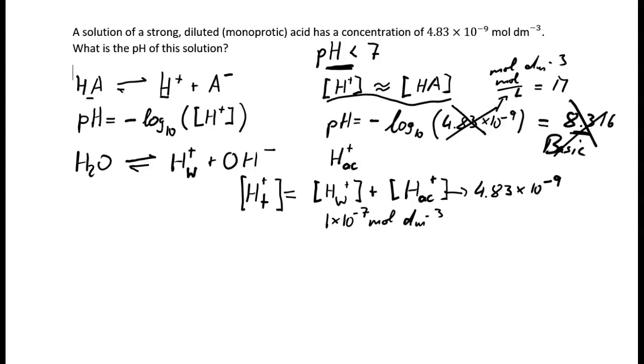And now we can do our pH. So we do pH equals negative log to the base of 10 for the total proton concentration. So that would be negative log of 10, and we use the water 1 times 10 to the minus 7 plus 4.83 times 10 to the minus 9. And they are all in the same unit, mol decimeter to the minus 3. And now we can calculate that and put this into the calculator, and we would get a pH of 6.98.